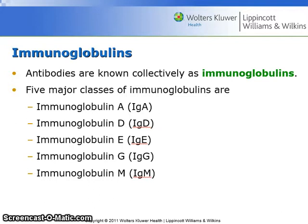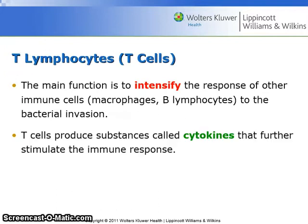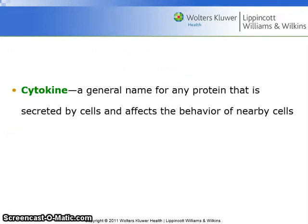Antibodies are known collectively as immunoglobulins. Five major classes of immunoglobulins are A, D, E, G, and M. T lymphocytes mainly function to intensify the response of other immune cells such as macrophages and B lymphocytes to the bacterial infection. T cells produce substances called cytokines that further stimulate the immune response. A cytokine is a general name for any protein that is secreted by cells and affects the behavior of nearby cells.